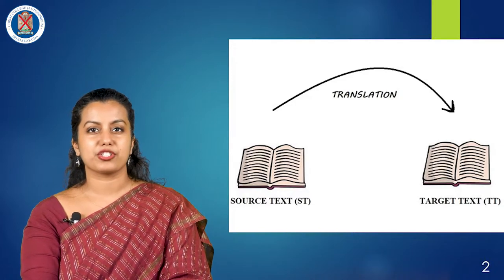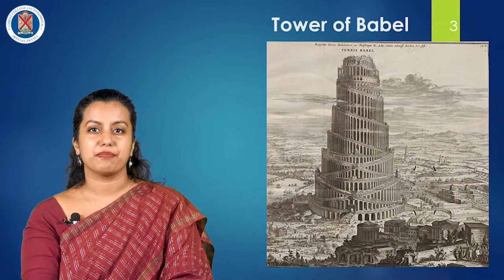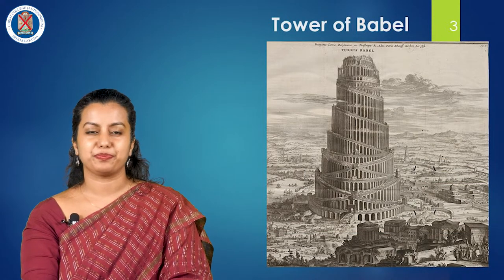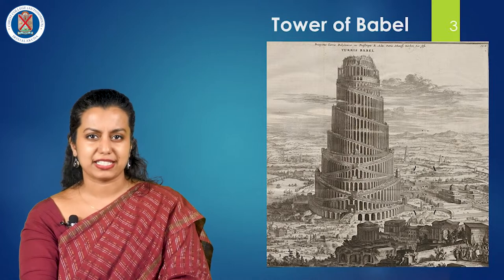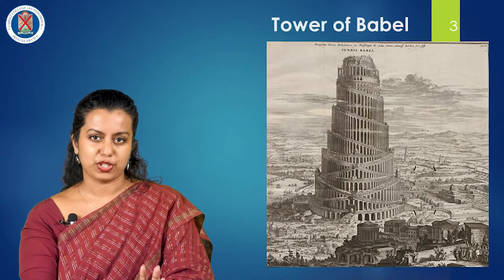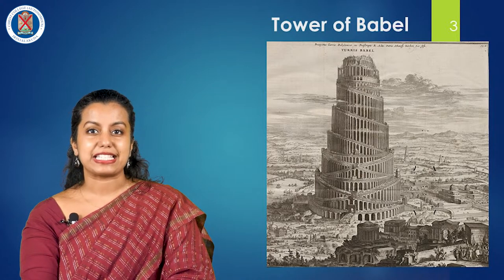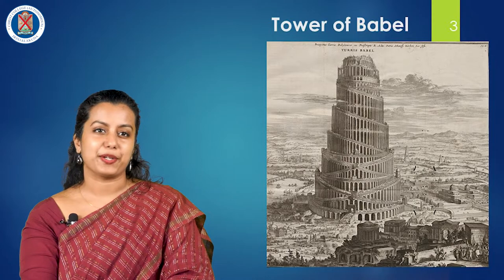If we look into the origin of translation, there is a story in the Bible about a tower of Babel in Genesis, chapter 11. The story goes like this: the entire human race spoke a single language and they had unity. One day they all agreed to build a city and a tower with its top in the sky. Yahweh, the God, observing their city and tower, confounded their speech so that they could no longer understand each other, and scattered them around the world.